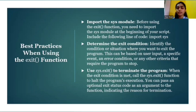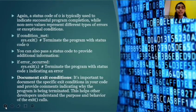Use system exit to terminate the program. When the exit condition is met, call the system exit function to halt the program's execution. You can pass an optional exit status code as an argument to the function indicating the reason for termination. Again, a status code of 0 is typically used to indicate successful program completion, while non-zero values represent different types of errors or exceptional conditions.